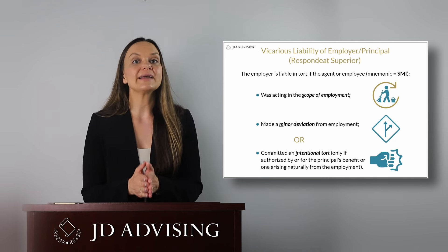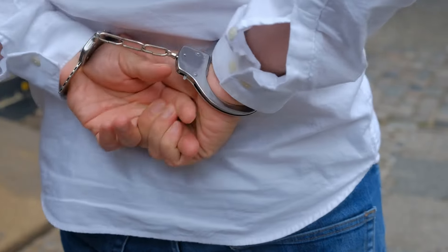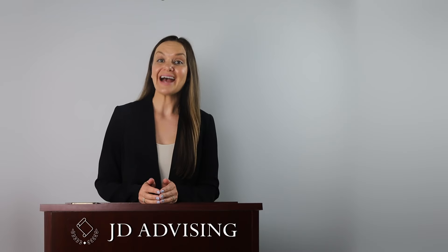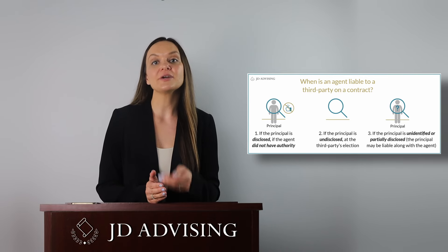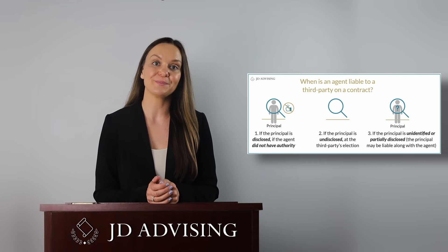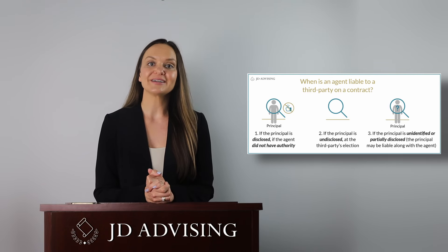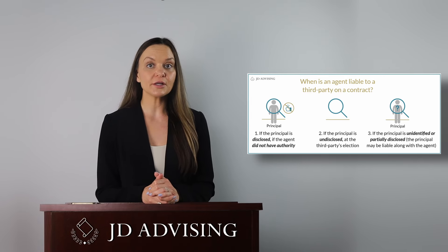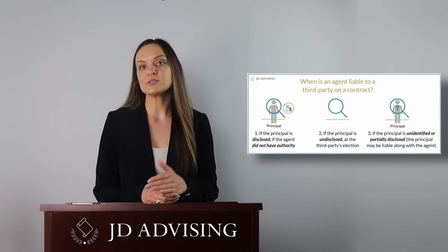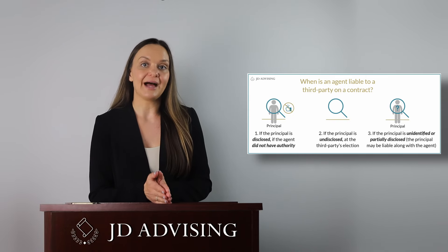For example, if a man owned a nightclub and employed bouncers, and the owner told a bouncer to punch a rowdy patron, the principal would be liable for that action. The last highly tested agency issue is the agent's liability on contracts. An agent is liable on a contract they enter into if they do not have actual or apparent authority. The agent is also liable if the principal is undisclosed — meaning the third party doesn't know the agent is working on someone else's behalf. If the principal is partially disclosed, both the agent and the principal are liable to the third party.